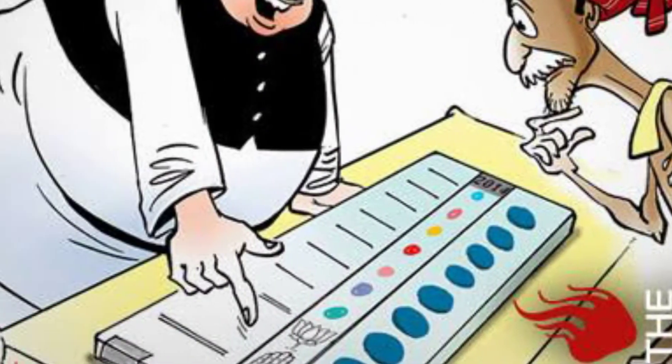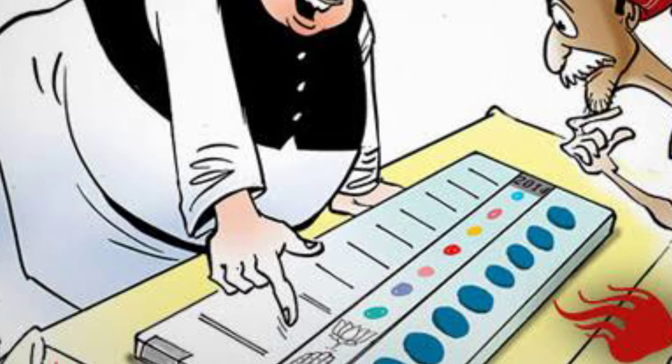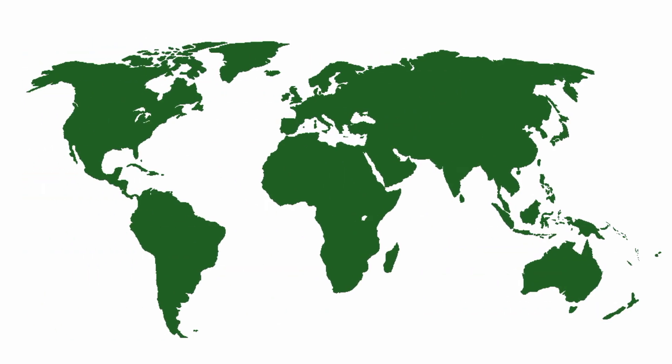In the ballot paper we see that the names of the candidates are written and their symbols are also provided. In the case where an uneducated person goes to vote and does not know how to read, he should identify the symbol of their candidate. On the basis of those symbols he can provide his vote to his own candidate. Election symbols help the illiterate voters in identifying candidates.